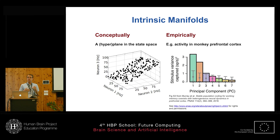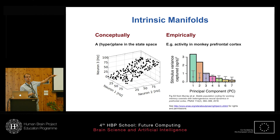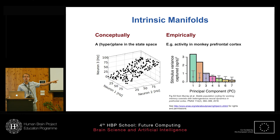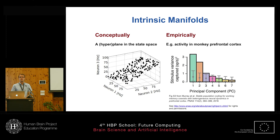Another way of seeing this is if you do a principal component analysis. If you look at the principal components, you will see that you only have a few principal components that are enough to describe the activity. This data is from the prefrontal cortex of a monkey, and you can see that with maybe six or seven components you describe most of the variance in this pattern.